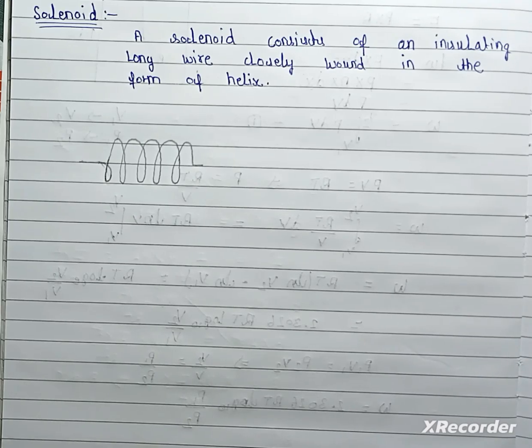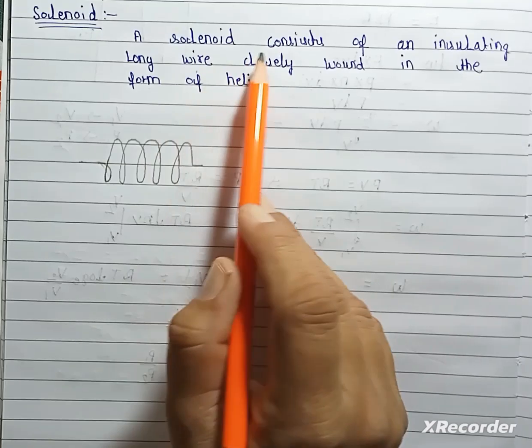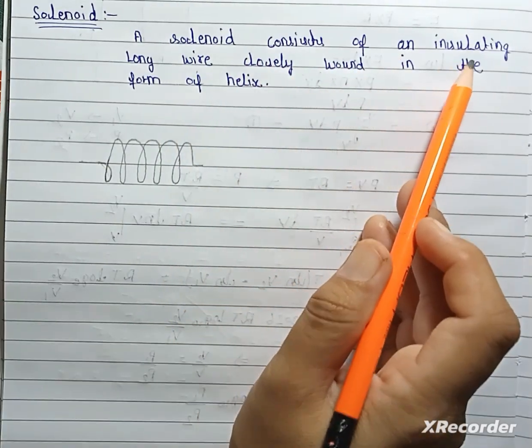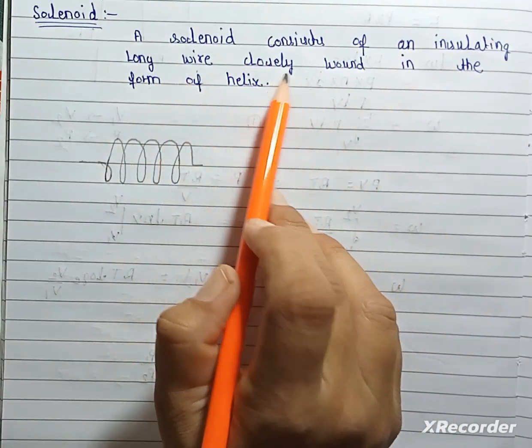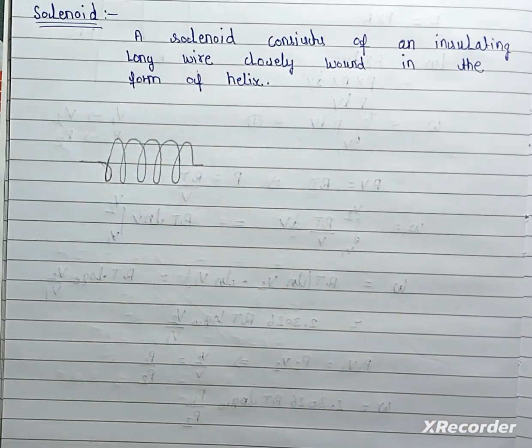Hello students, in this class we will discuss about solenoid. A solenoid consists of an insulating long wire closely bound in the form of helix.